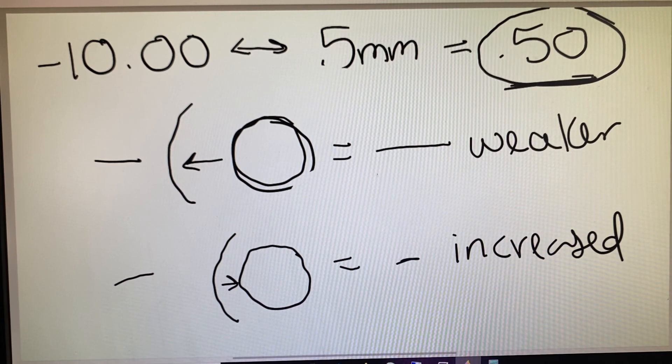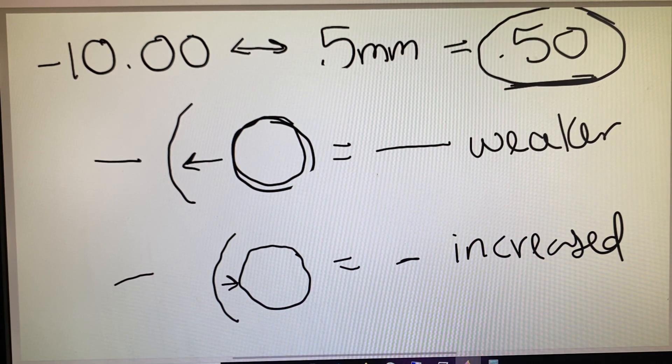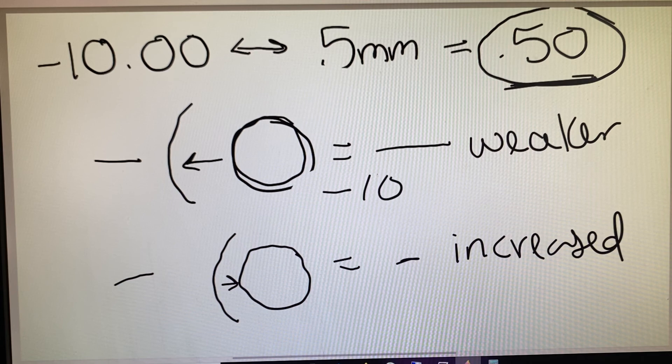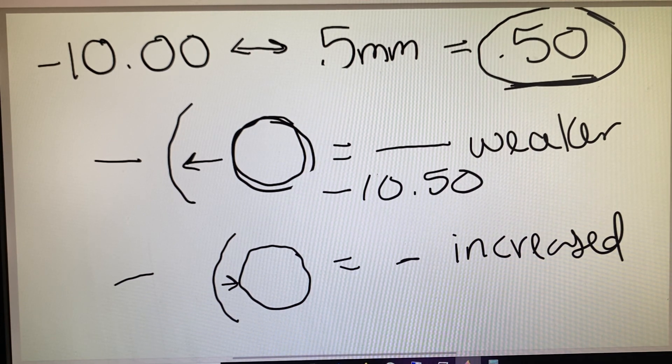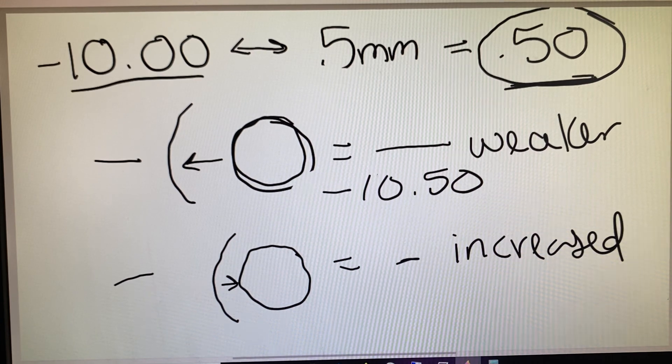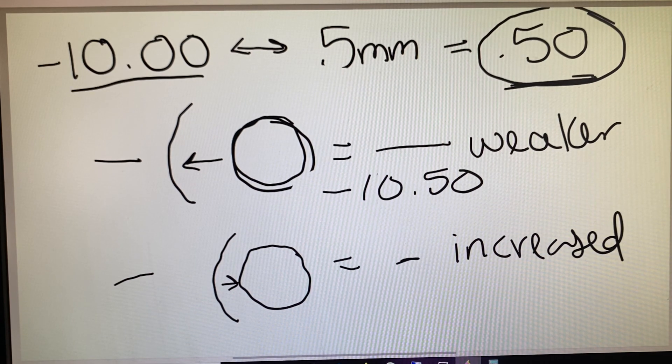So if we were doing that same question, but now they've asked us what is the compensation, if we were looking at that minus lens move further away, I would actually write a prescription of minus 10.50. This would make up for the fact that it feels weaker and the patient would then feel like they're looking through the appropriate minus 10.